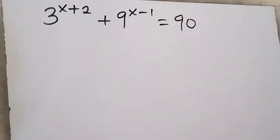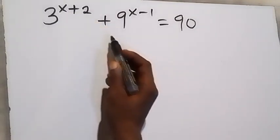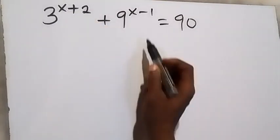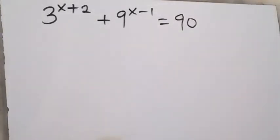Hello, how to solve this problem? 3 raised to power x plus 2, plus 9 raised to power x minus 1, equals 90.